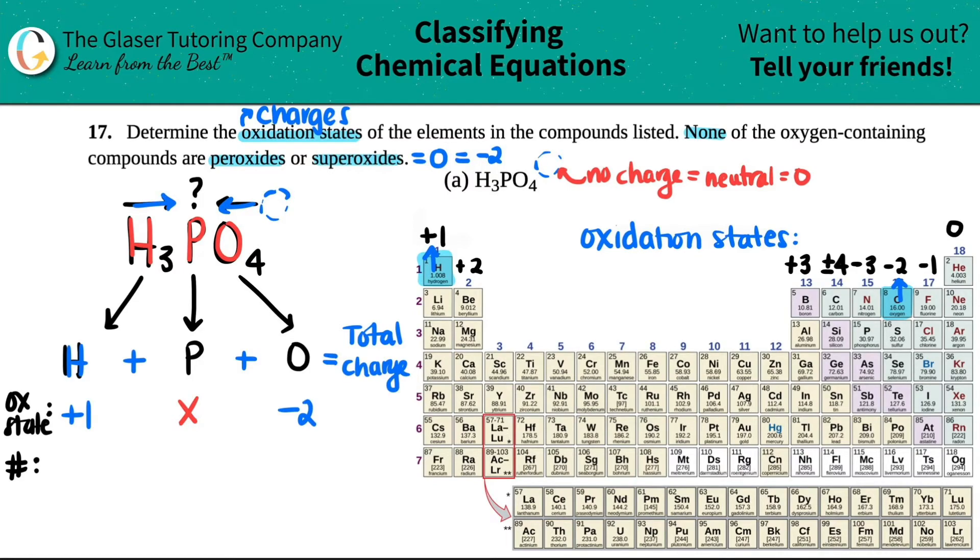Now I just need to gather up how many I have of each. How many hydrogen were here? Oh, there was three. How many phosphorus were here? There was one. And how many oxygens? Well, there was four. And remember, the addition of these always equal zero.